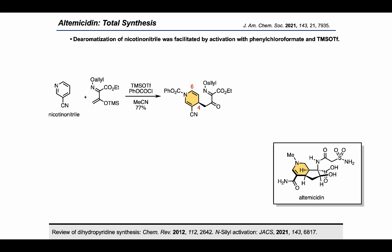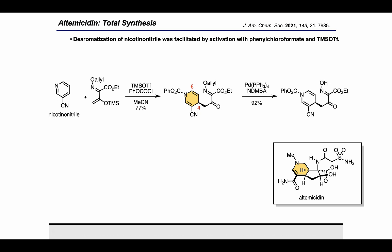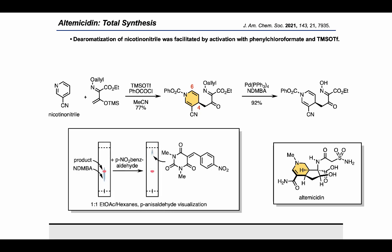Next, the allyl group was removed with palladium tetrakis and dimethyl barbituric acid, which is highly nucleophilic and serves as a sink for the allyl groups. Other synthetic chemists in the audience may appreciate that in practice executing this reaction required the addition of para-nitrobenzaldehyde during the workup to consume excess NDMBA and convert it to the aldol condensation product pictured, which was easily purified away from our adduct by column chromatography. Otherwise we found that the NDMBA tended to streak across our columns and co-elute with our desired product.